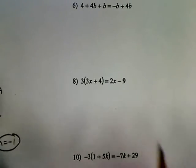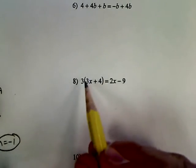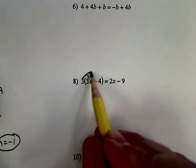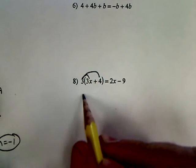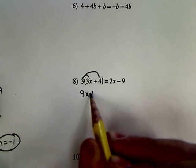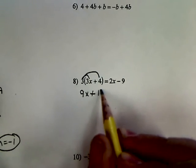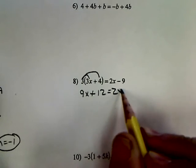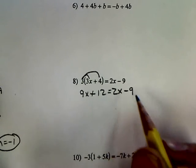Here's another example. Get rid of the parentheses. Distribute. 9x plus 3 times 4 is 12, equals 2x minus 9.